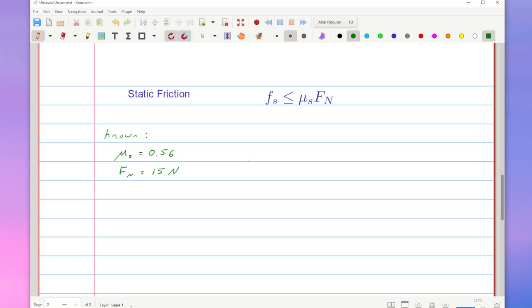we could then go ahead and solve for the frictional force. Now we have to be careful because there's this less than sign in here. So that means the static friction is less than or equal to 0.56, which has no units because it's just the coefficient, and the 15 newtons multiplied together. What this means is that my static friction value has got to be less than or equal to 8.4 newtons.